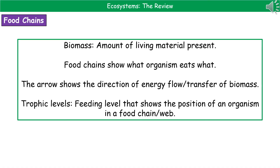One other term you could see used in conjunction with food chains is trophic level. A trophic level is a feeding level that shows the position of an organism in the food web or chain. Your producers are your first trophic level, then your primary consumers are the next trophic level, and so on.